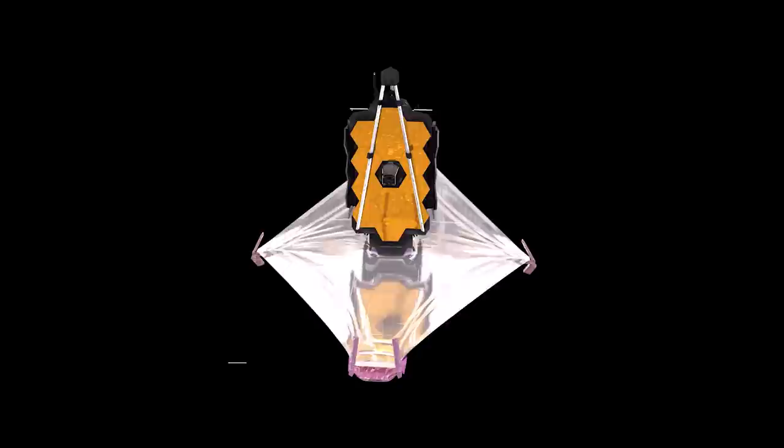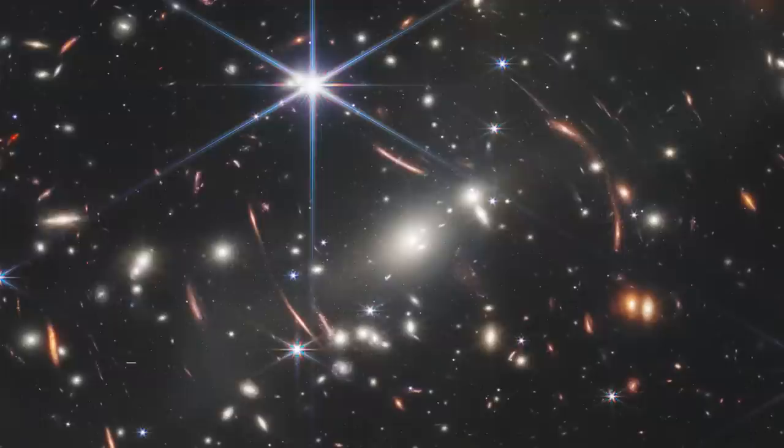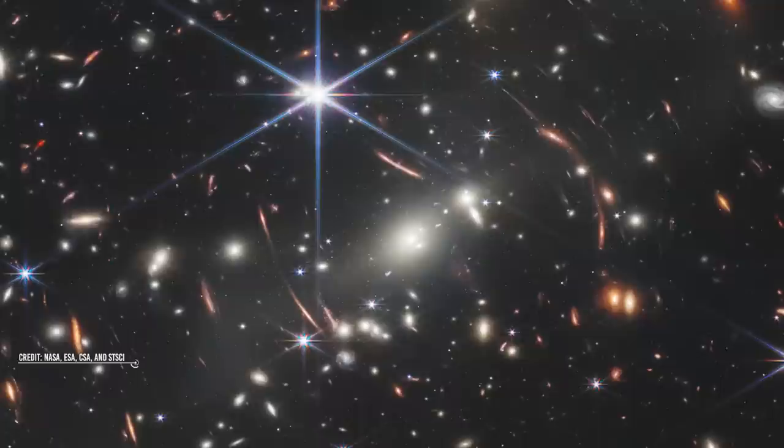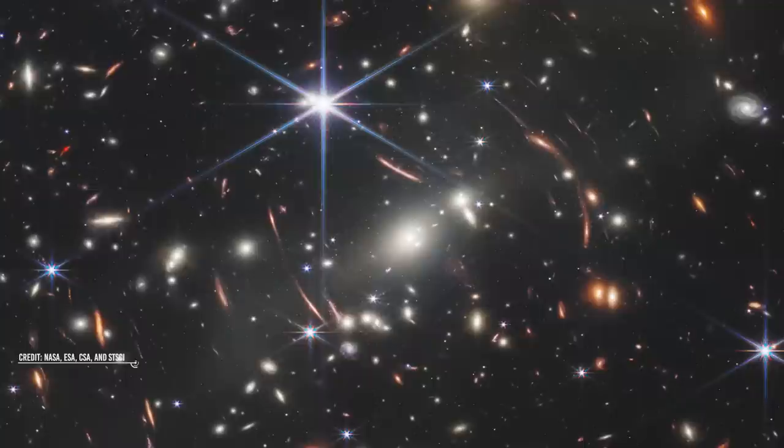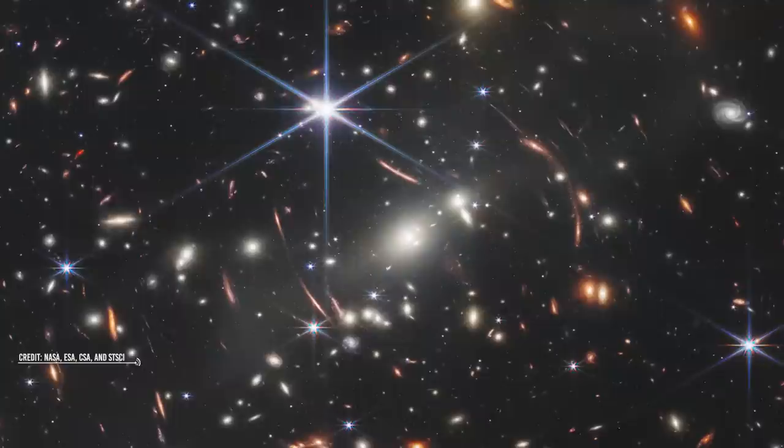The first to be presented was the one immediately dubbed by the media as the first Webb Deep Field, which is a very deep shot of a large cluster of galaxies located in the southern constellation of Flying Fish at a distance of 4.6 billion light-years. The cluster acts as a gravitational lens, bending the light of some much more distant galaxies that lie behind the cluster and appear in the images as distorted arcs of light.